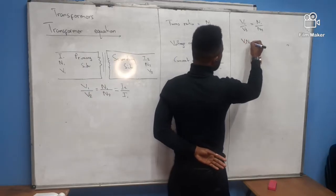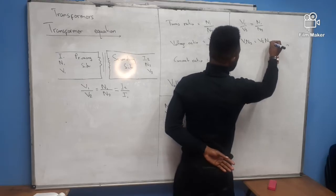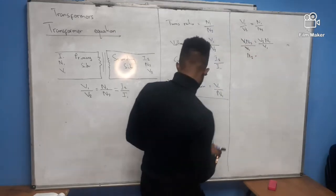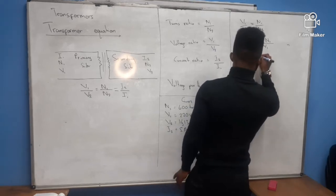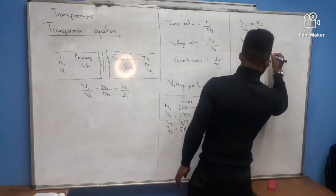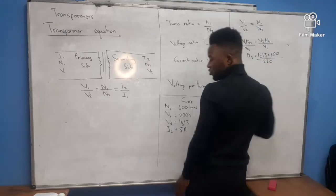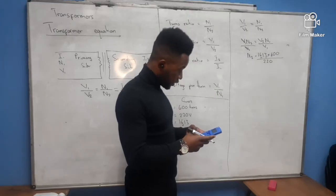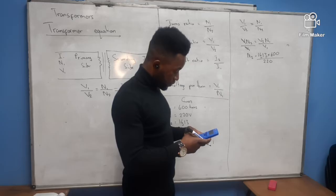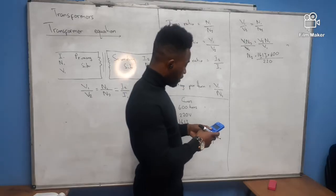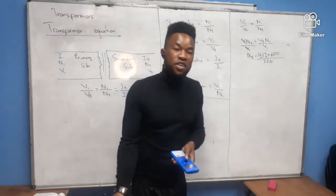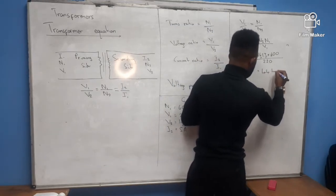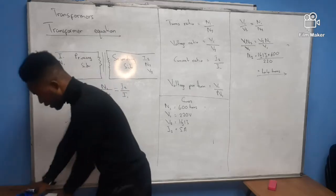Substituting the values: N2 = (16.13 × 600) / 220. Using the calculator, that gives 43.99. Since it's a number of turns, we round off to the nearest whole number, which is 44 turns.